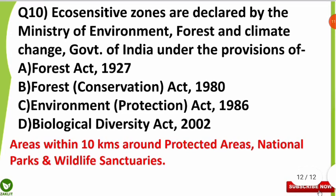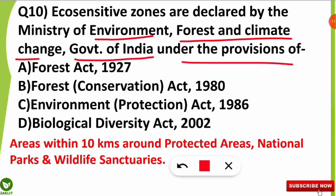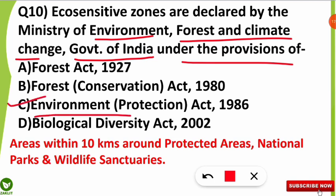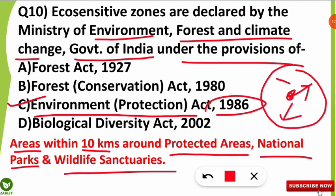The tenth question: eco-sensitive zones (ECZ) are declared by the Ministry of Environment, Forest and Climate Change of the Government of India under which provision? The correct option is the Environment Protection Act of 1986. These areas are within 10 kilometers around protected areas, national parks, and wildlife sanctuaries, because they are very fragile and sensitive. Within 10 kilometers around a national park, the area is called an ecologically sensitive zone, to protect the species.